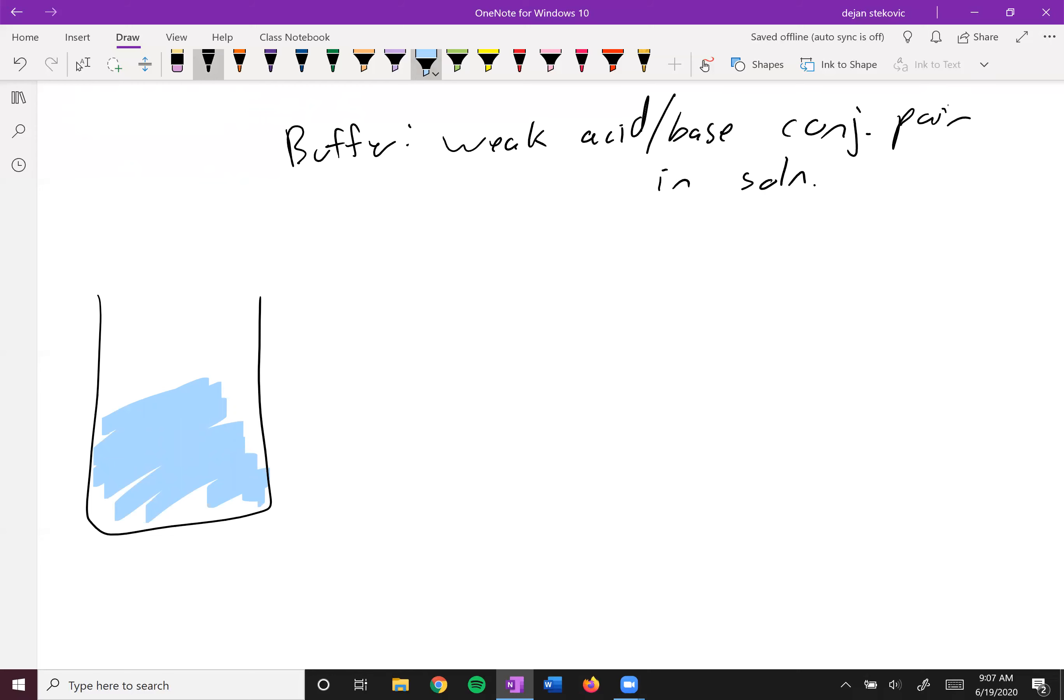For example, we've got some water in here, and then we're going to toss in a weak acid-base conjugate pair. Let's take ammonia, NH3, that's a weak base, and then we're going to add some ammonium, which is its conjugate acid. So in solution now, we've got some NH3 floating around and some NH4+ floating around.